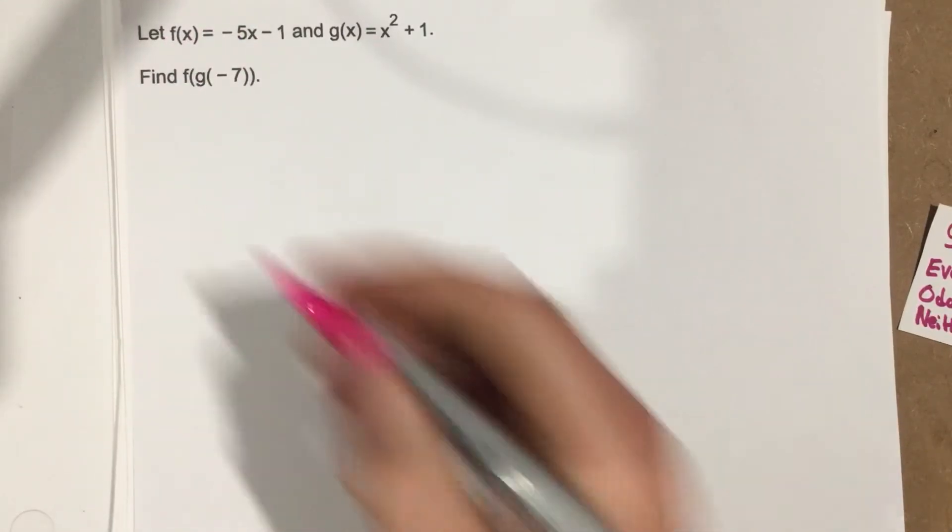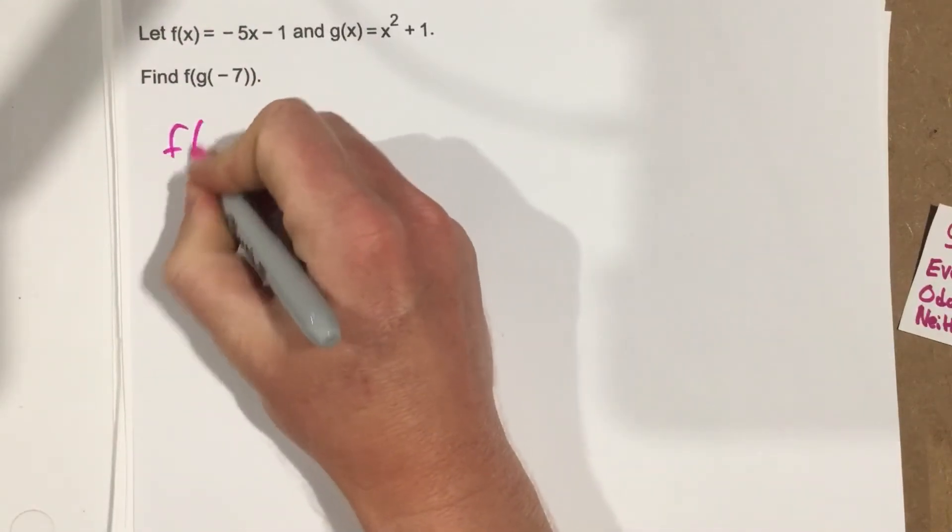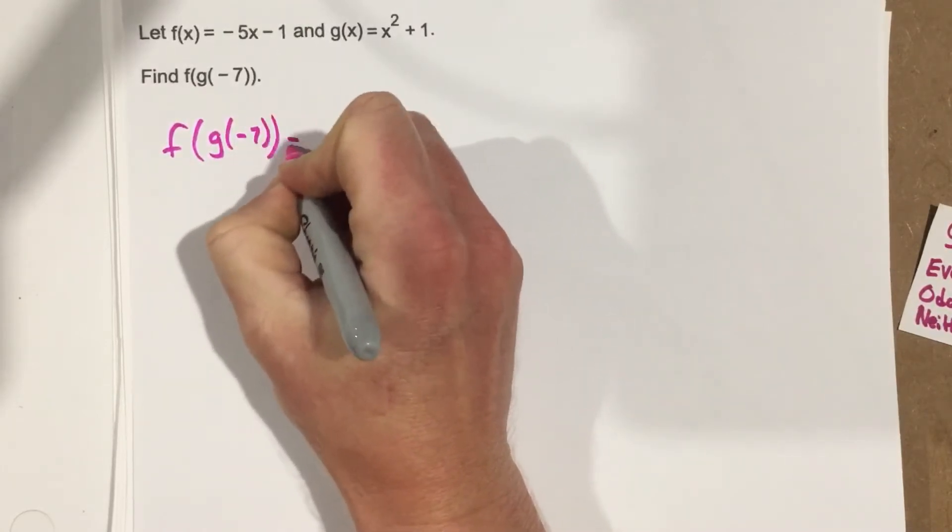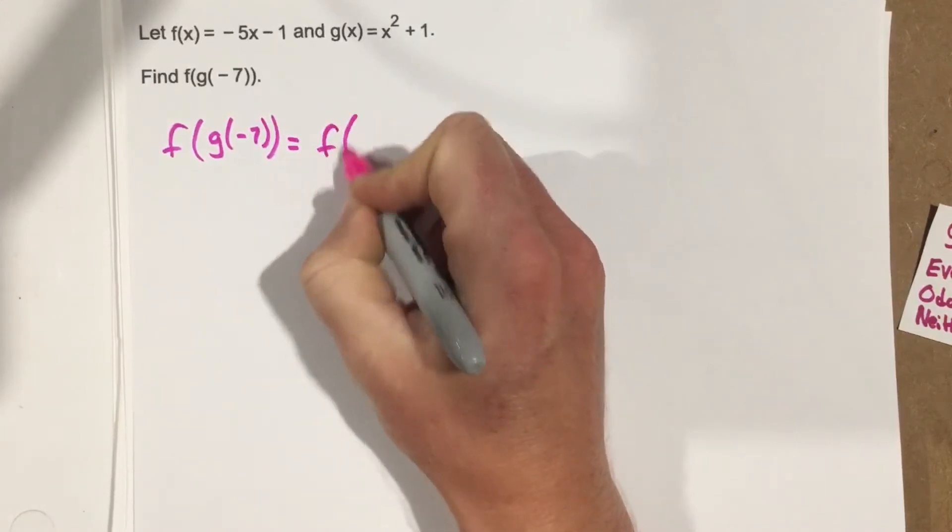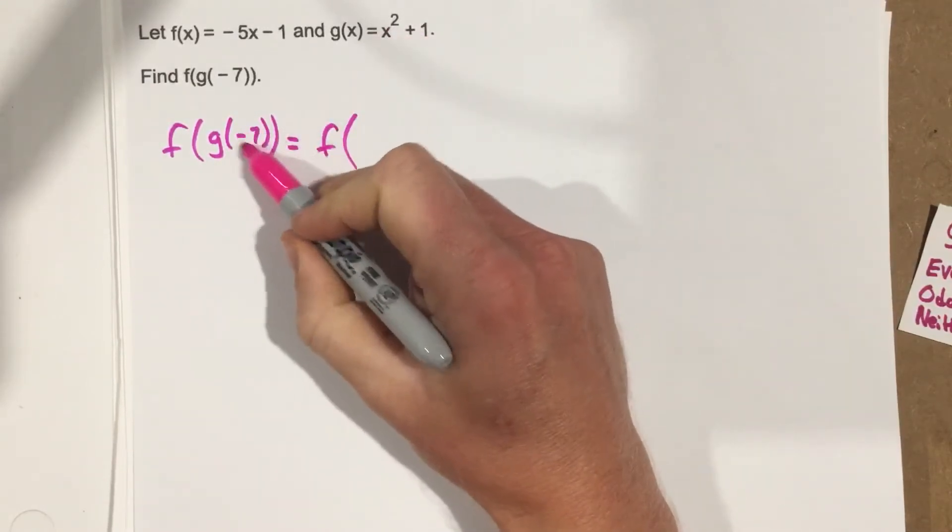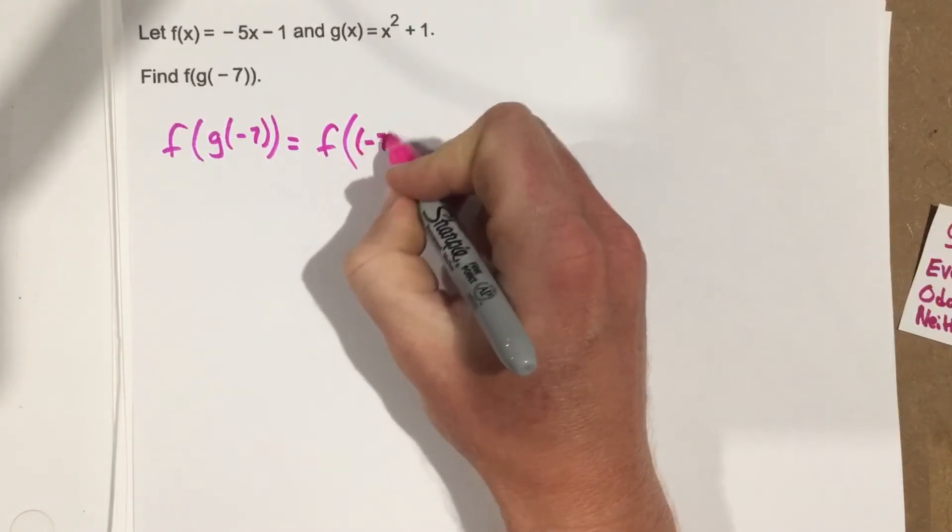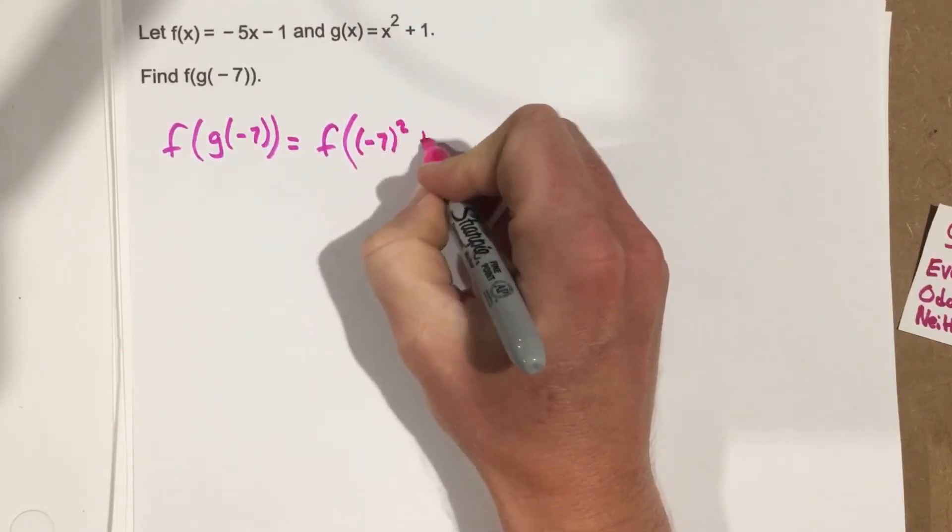Let's go ahead and set this up. So we have f of g of negative 7. That's going to equal f and then we're going to actually plug in negative 7 into the g function. f of negative 7 squared plus 1.